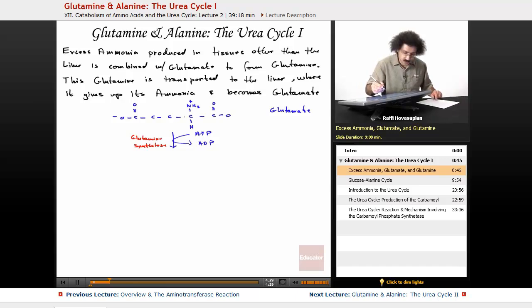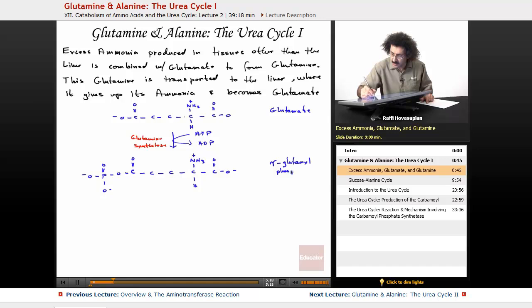What you end up with is we have just phosphorylated this because we want to create a good leaving group on this end, because that's the end that we're going to attach this ammonia, this excess ammonia. So this glutamate first is converted to this phosphate called gamma-glutamyl phosphate. We're putting this phosphate here to create a good leaving group, because now the ammonia is actually going to come in and attack this, and this is going to be the leaving group.